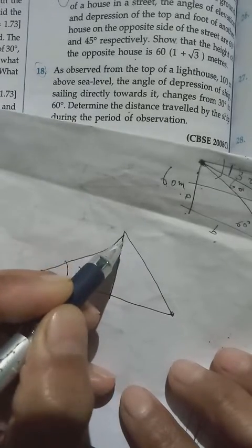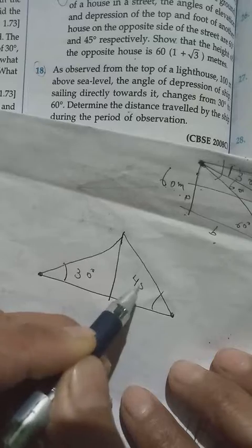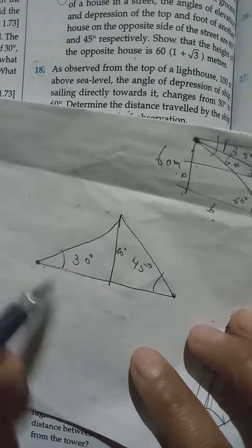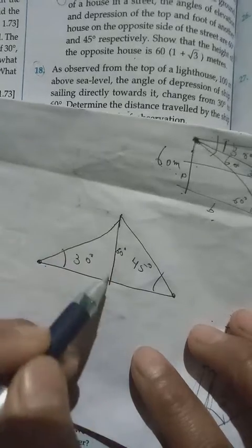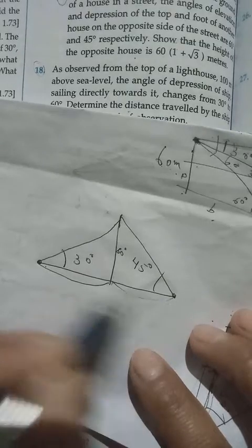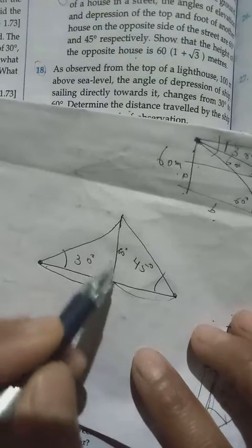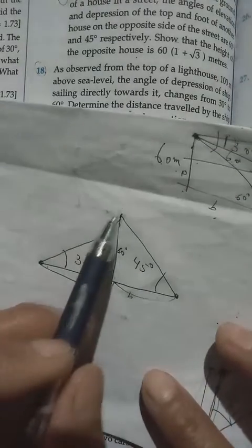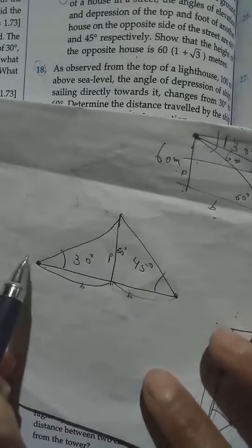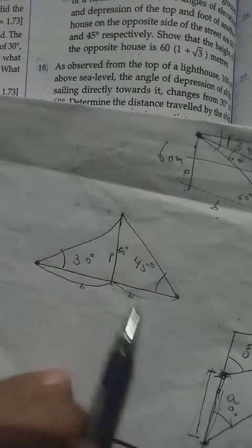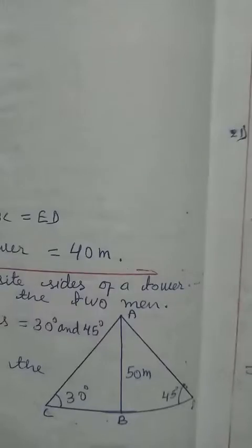The other man looks at the same tower and finds that the angle of elevation is 45°. The height of the tower is given to be 50m, and we have to find the distance between these two men. We have two right triangles. We will find each distance separately — first from here to the base, then from there to the base — and add them together. We will use tan, since we have perpendicular and base.